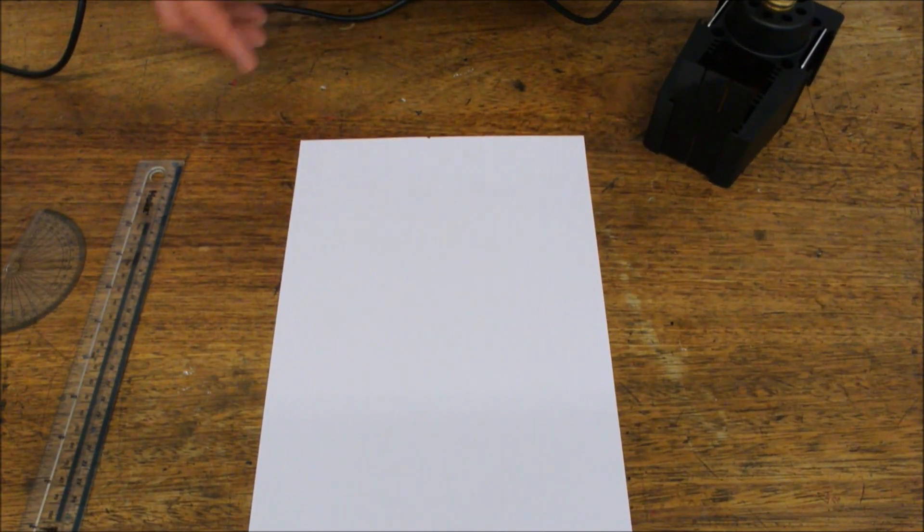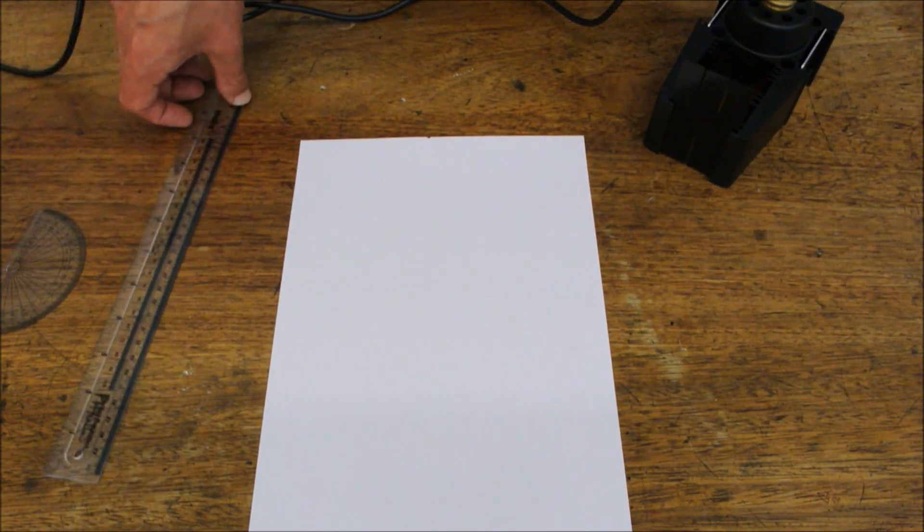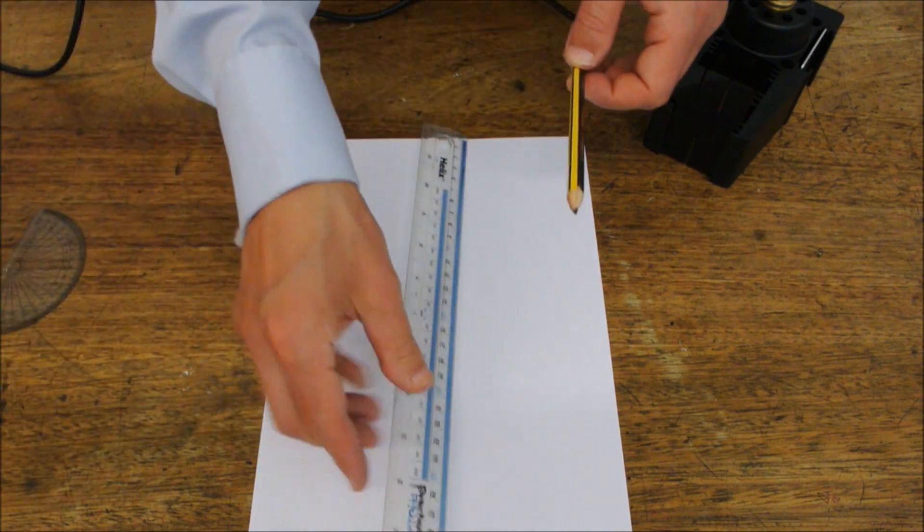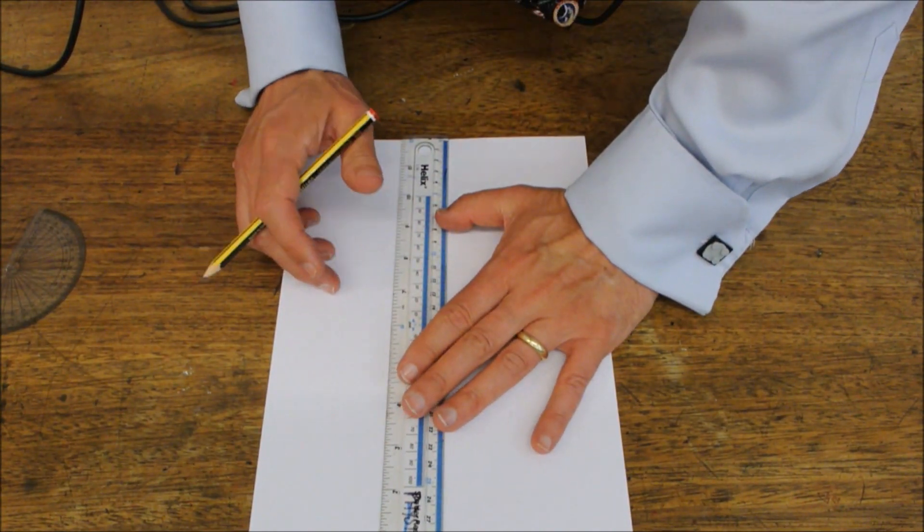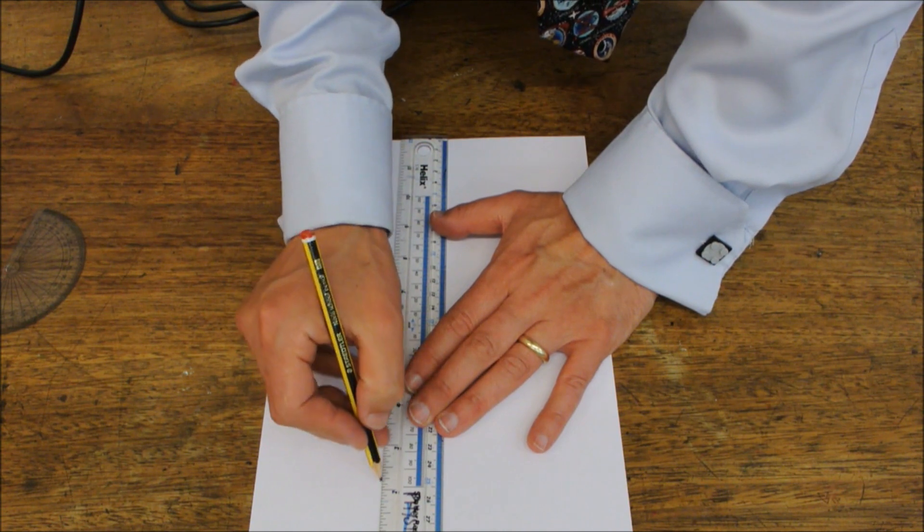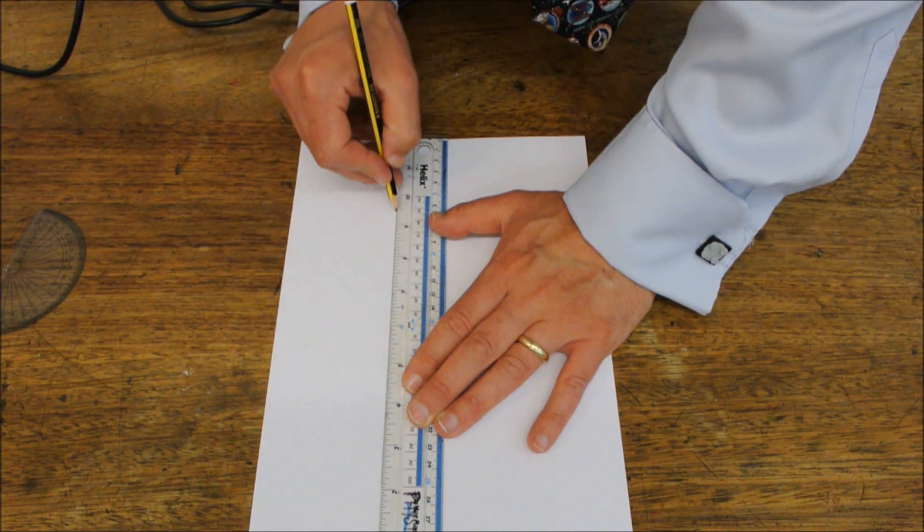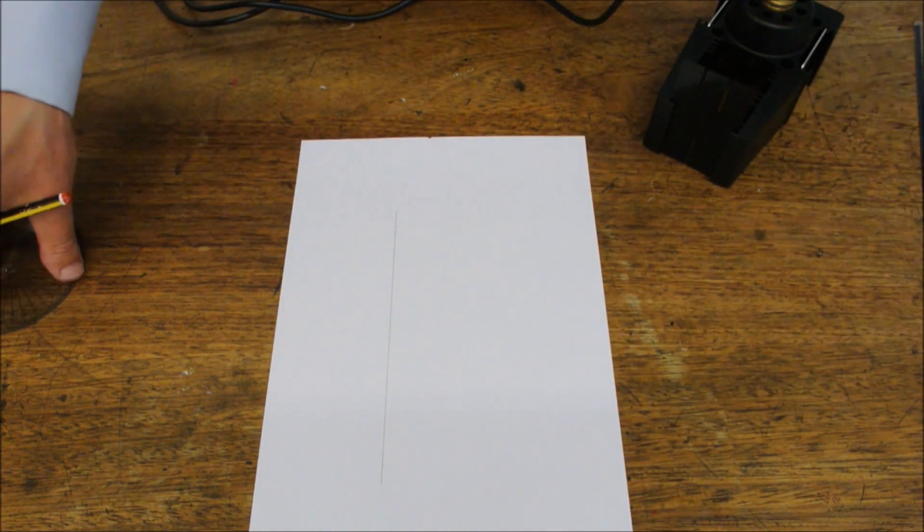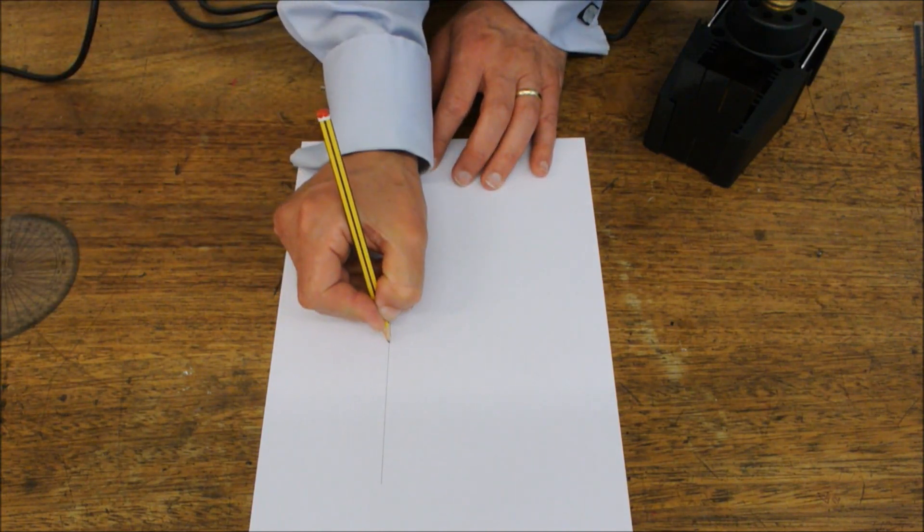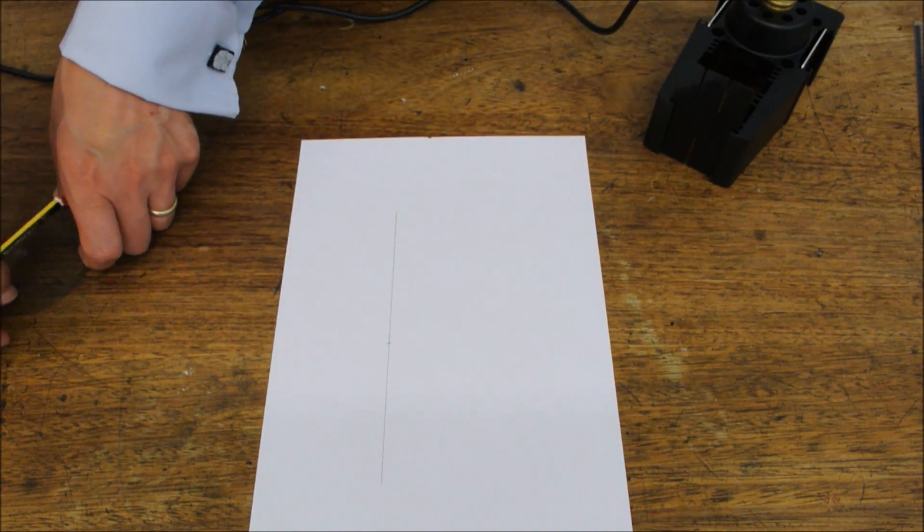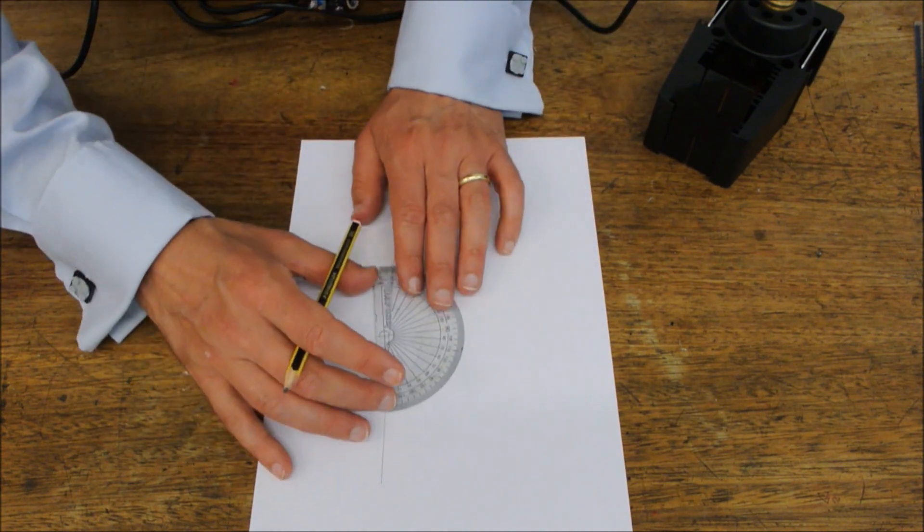And now we're going to look at the reflection of light. The first thing we need to do is to draw a line on the paper. And that will give us the position that our mirror is going to sit in. Somewhere near the centre.